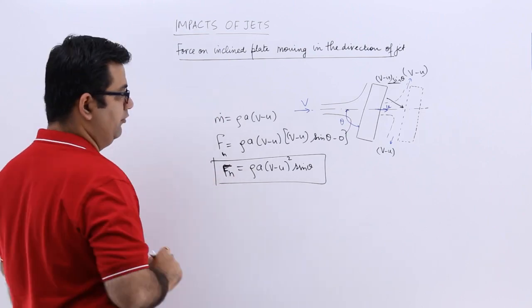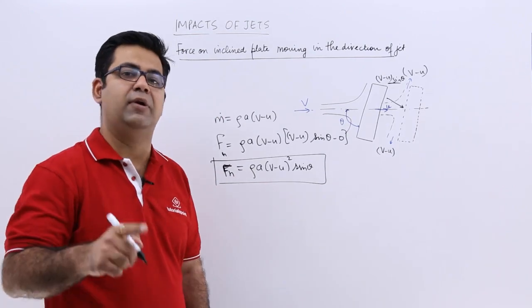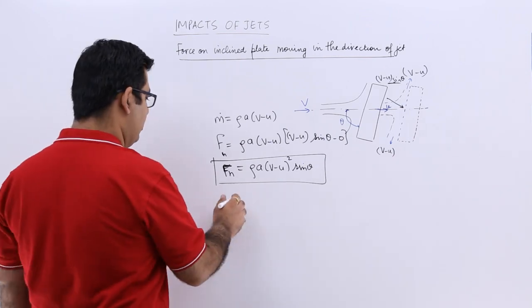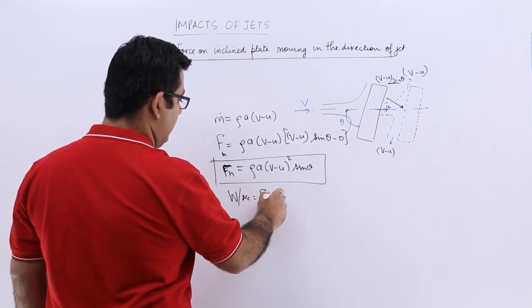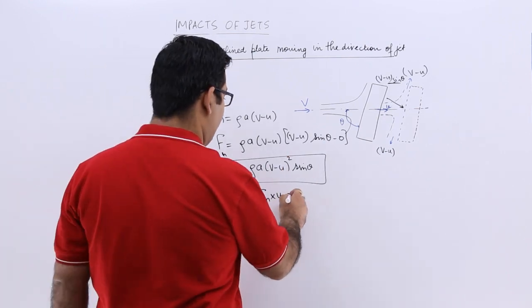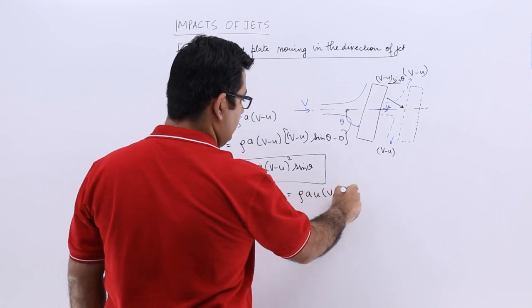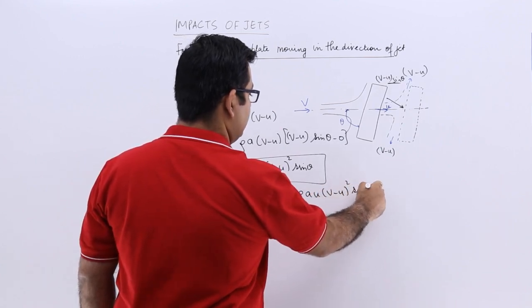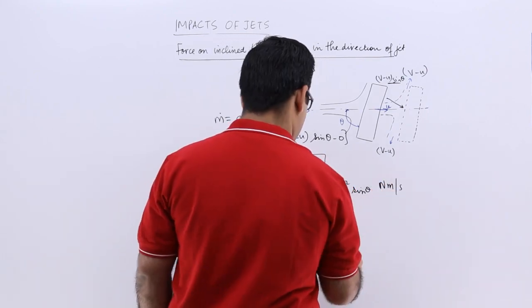So that is the value of the force exerted by the jet onto the plate in the normal direction to the plate. So again you will have some work done per second. This would come out to be rho into a into u into v minus u whole square into sin theta, that is Newton meters per second.